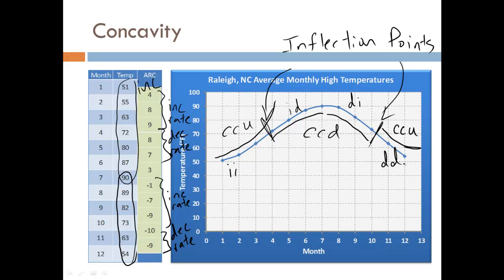So, looking at the values — whether they are all increasing or all decreasing — and whether the average rate of change values are positive or negative tells us if the function is increasing or decreasing. But what happens with the rate of change is what really determines the concavity: increasing at an increasing rate is concave up; increasing at a decreasing rate is concave down; decreasing at an increasing rate is concave down; and decreasing at a decreasing rate is concave up.